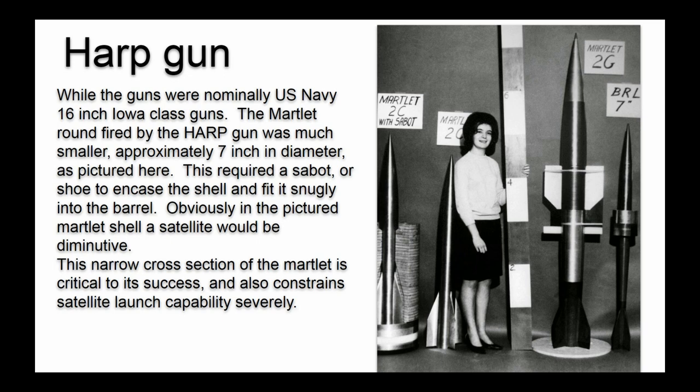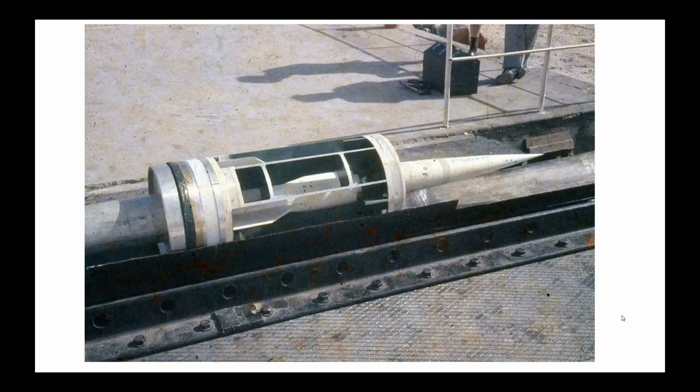This required a sabot or shoe to encase the shell and fit it snugly into the barrel. And this is the picture of the sabot, encasing the martlet shell. So you got to be careful when you're thinking you could launch satellites into space. The original shell was too small and they never made a shell big enough to fit the barrel.